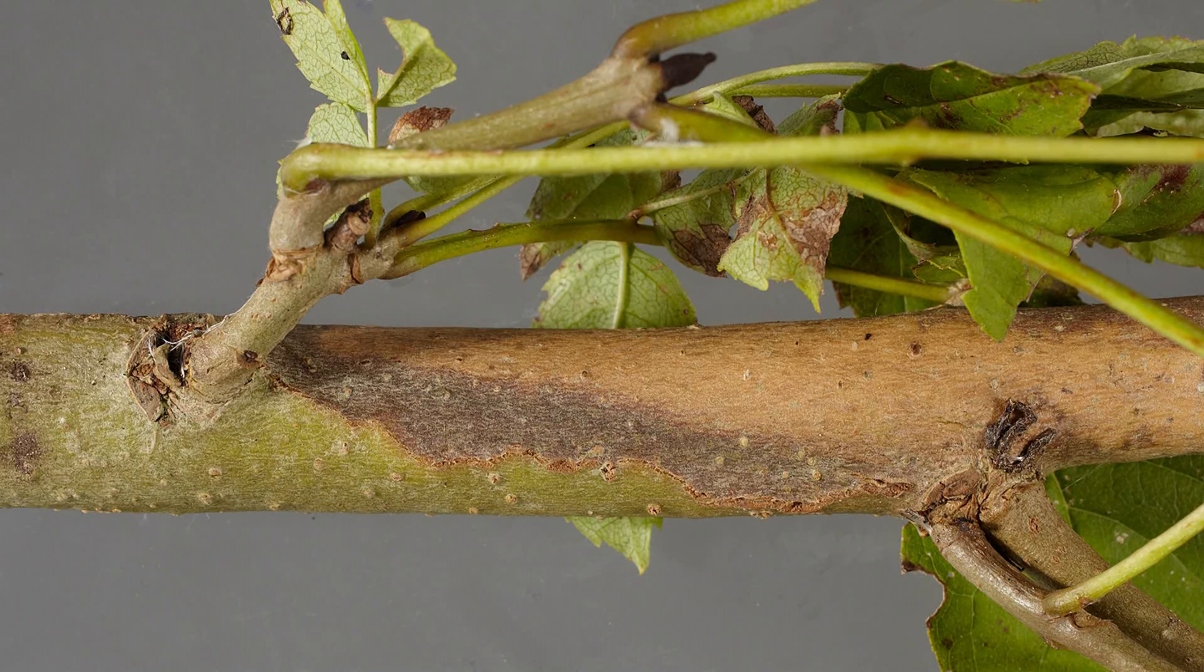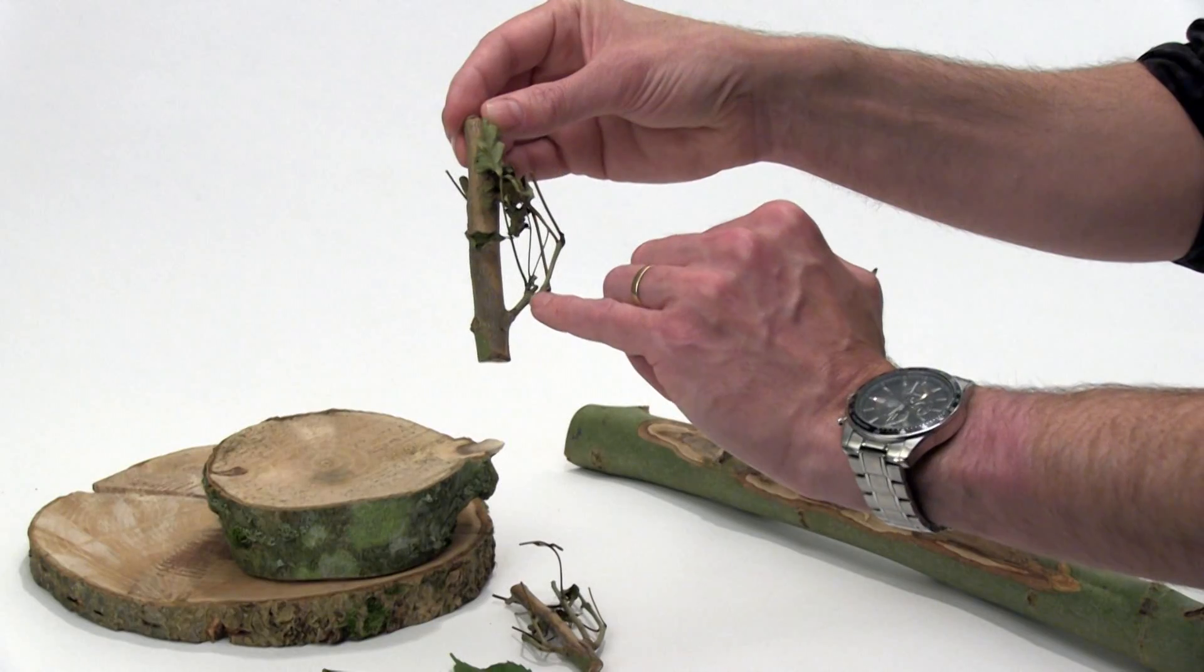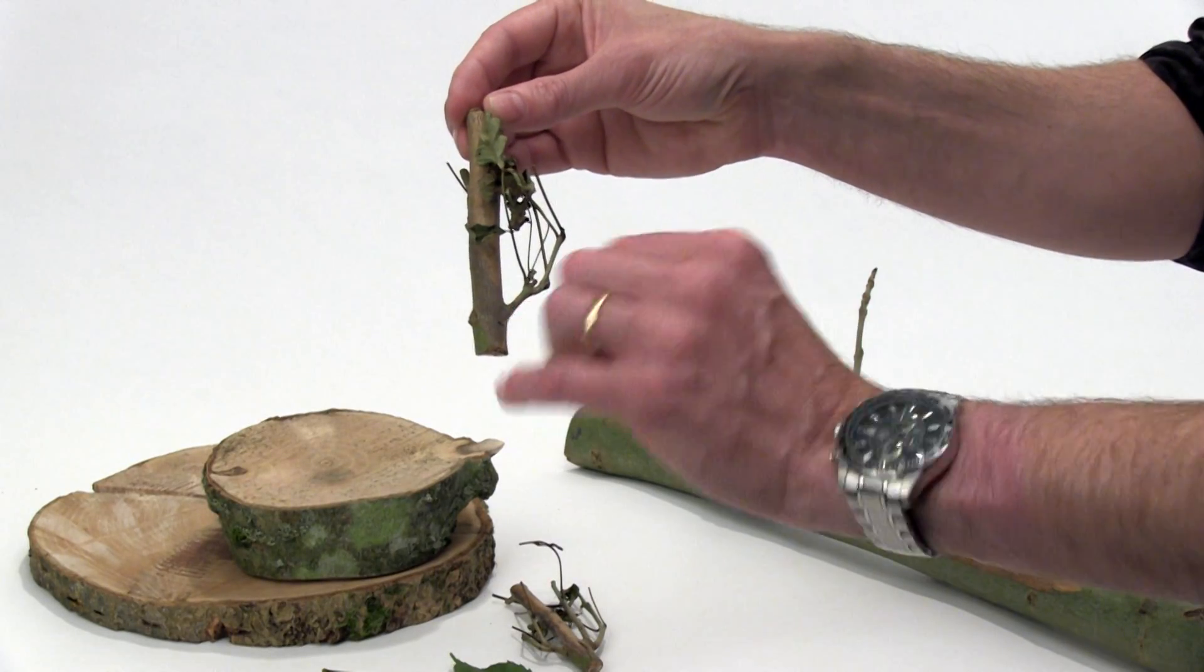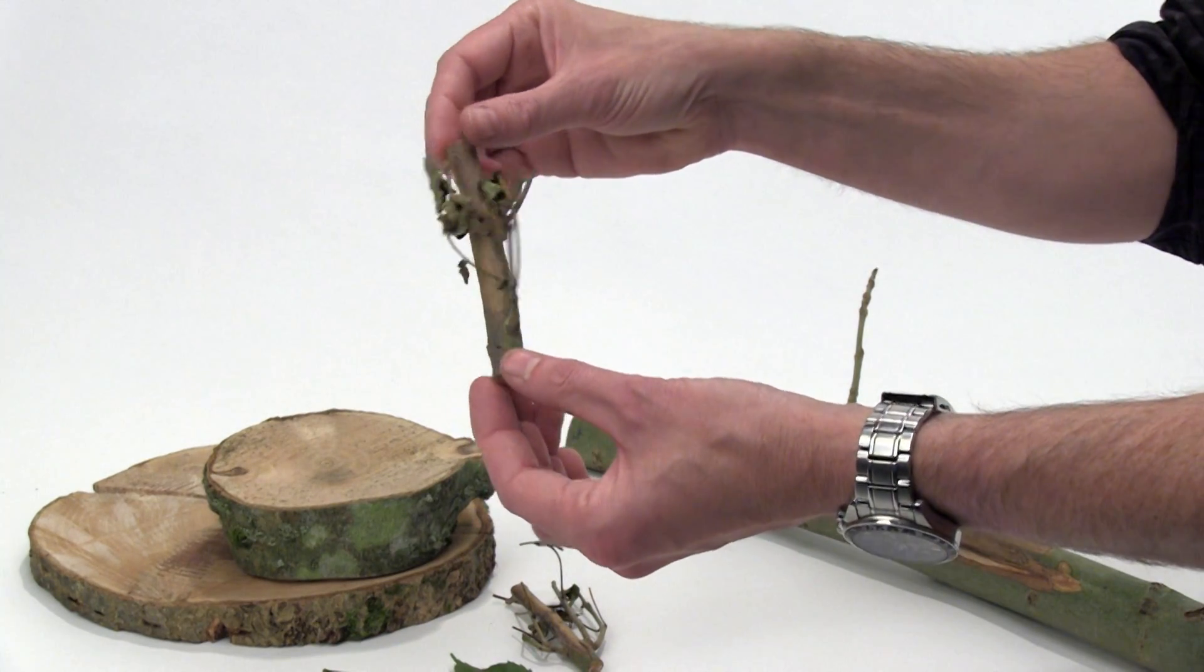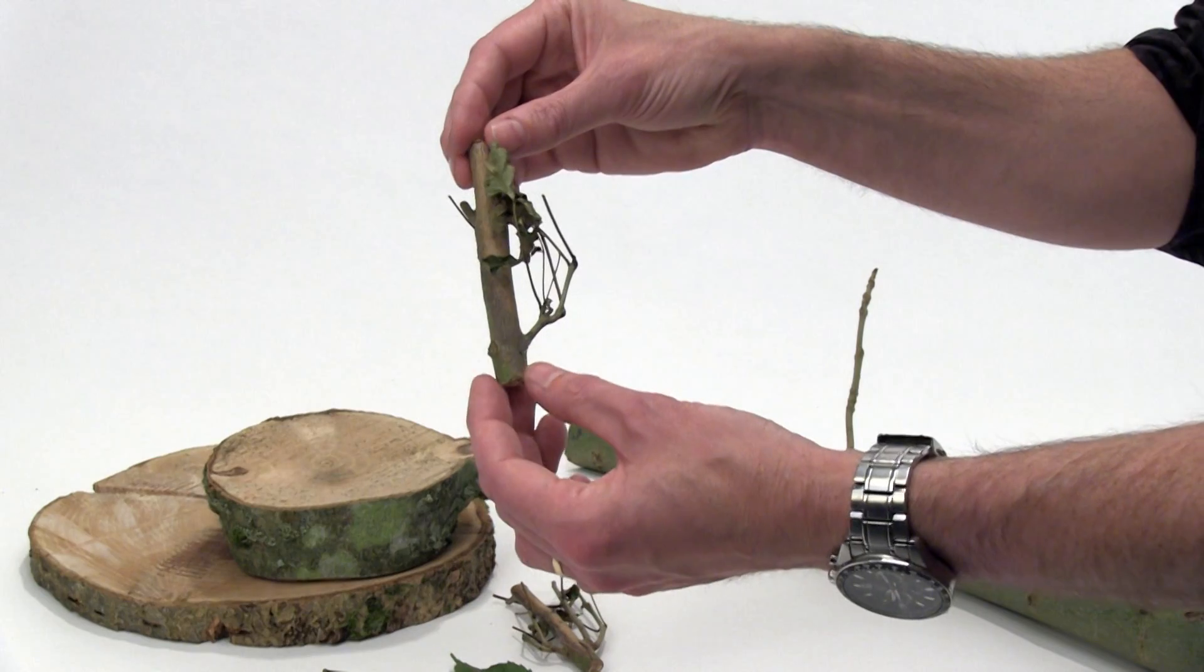Now this often has a diamond shaped lesion because as the disease came in through this point here, it then extends downwards and upwards causing this canker. So it's often quite a diamond shaped lesion.